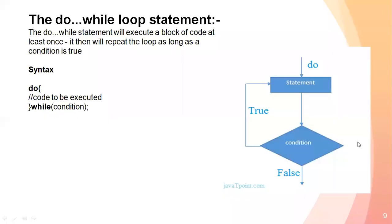Let's move on to the do-while loop statement. The do-while loop executes a block of code at least once, then repeats the loop as long as the condition is true. The statement executes first, then the condition is tested.